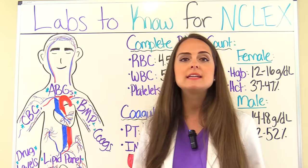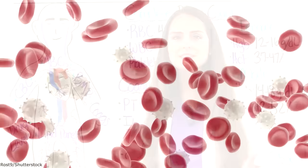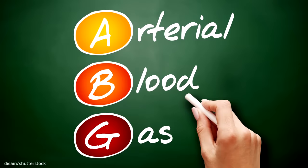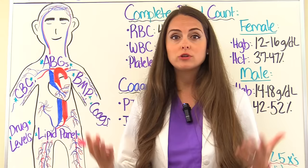So what are they? Well, a CBC — a complete blood count — tells us about the cells in our blood, like our red blood cells, white blood cells, platelets, all those important cells that help us maintain life. In addition, our arterial blood gases, ABGs, tell us about the acid-base imbalance in our patients, especially if our patient is having a respiratory or metabolic problem. It can tell us how bad it is and if our treatment is working to help correct the problem.